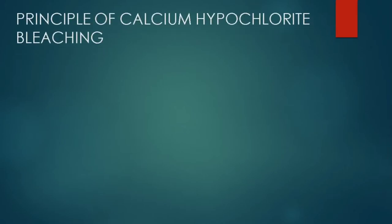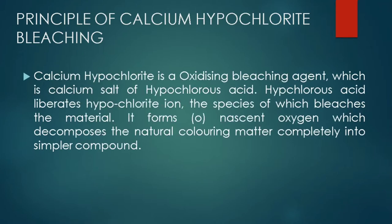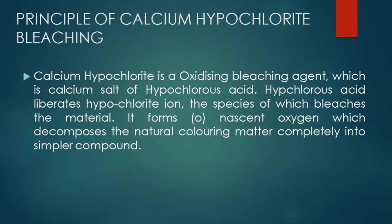The principle of calcium hypochlorite bleaching: calcium hypochlorite is an oxidizing agent which is the calcium salt of hypochlorous acid. Hypochlorous acid liberates the hypochlorite ion, the species which bleaches the material. Calcium hypochlorite dissociates to liberate hypochlorous acid and hypochlorite ion. The hypochlorite ion then liberates nascent oxygen, which decomposes the natural coloring matter completely into simpler compounds.